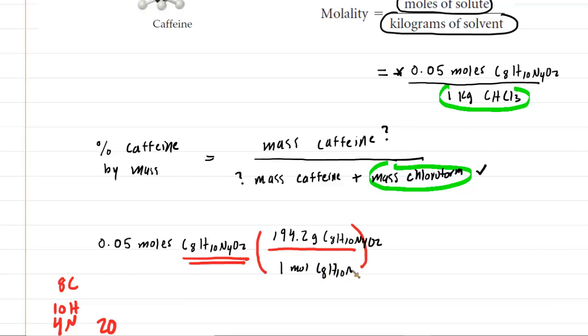And if you study the way in which we've set up this conversion, you can see that the moles of caffeine here in the numerator will cancel with the moles of caffeine down there in the denominator. So we'll go ahead and multiply this out. So 0.05 times the 194.2, and you will get 9.71 grams of caffeine.